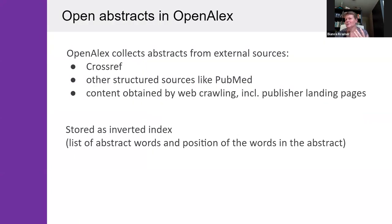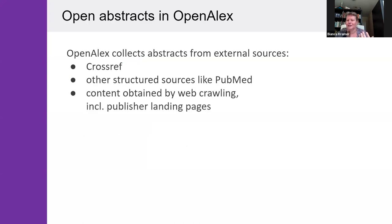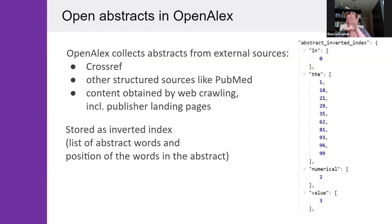That's where OpenAlex comes in as an interesting additional source of open abstracts. OpenAlex collects abstracts from external sources, including Crossref, but also other sources like Unpaywall, and also content obtained by webcrawling, including publisher landing pages. Interestingly, they're stored in OpenAlex as an inverted index — a list of the words and the position of the words in the abstract — as a way to circumvent copyright claims on abstracts. So there are a lot of abstracts available in OpenAlex.